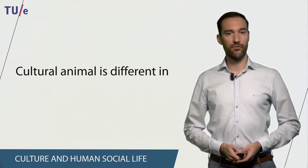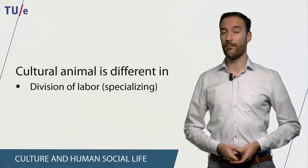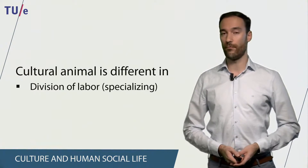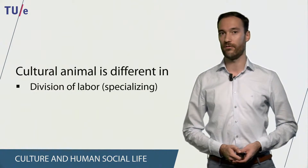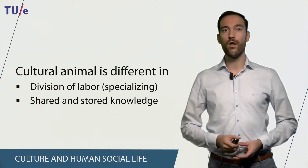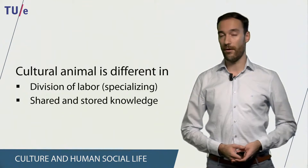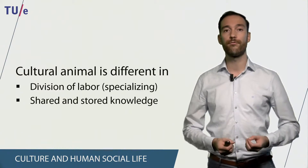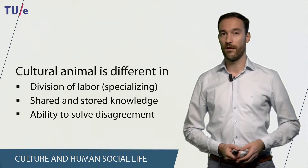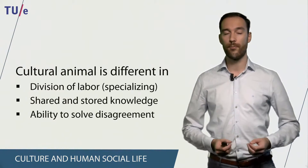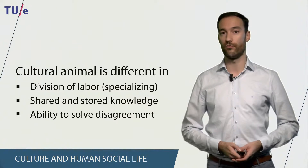A cultural animal is different from a social animal in a number of ways. One of these is that a cultural animal applies division of labor, which means that we specialize in specific tasks in order to be more effective as a species. We also share and store the knowledge that we gain about the world around us — we share it with others and store it for future generations. Finally, humans have the ability to solve disagreement, because we all argue from a set of basic values. For example, we want to heal sick people and we want our children to go to school.